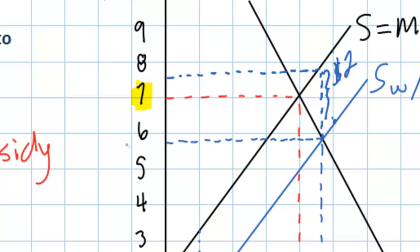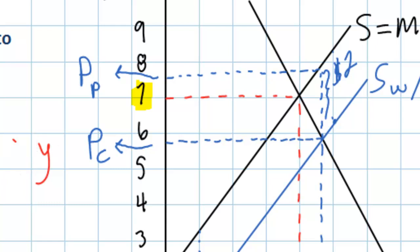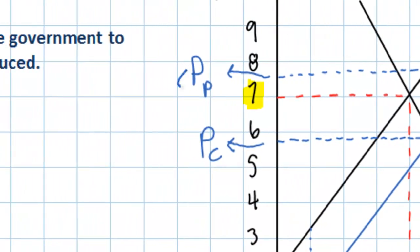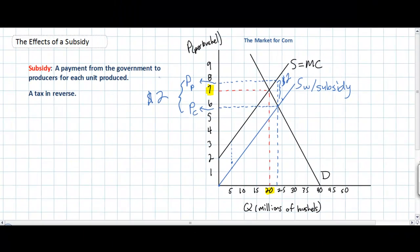Now we can see that the price that consumers pay is somewhere below $6 — we'll call that PC for the price that consumers pay. However, we can also see that the price producers see, or the price that they enjoy, is somewhere above $7 and just below $8. Of course, the difference between the price producers receive and the price consumers pay represents the $2 that the government is paying producers.